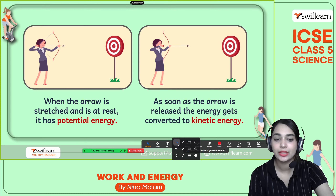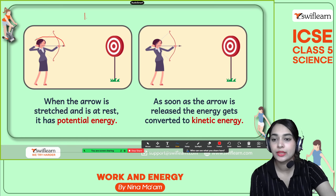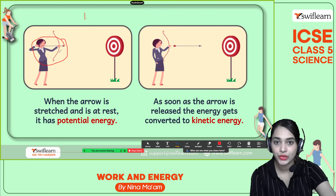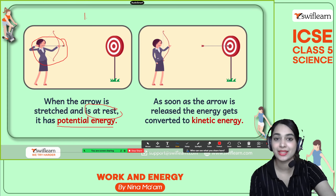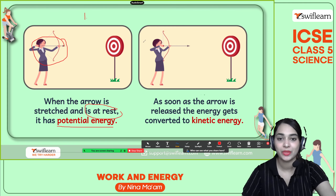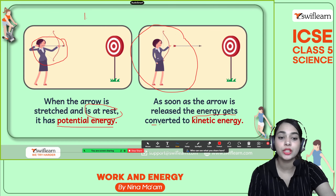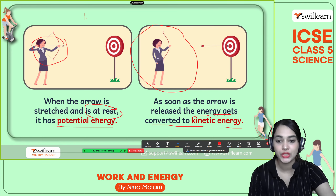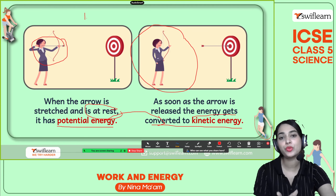Here are perfect examples of potential energy and kinetic energy. In the first scenario, the girl stretches the arrow but it is not moving yet — so it has potential energy when the arrow is stretched and at rest. Then it completely changes: as soon as the arrow is released, the energy gets converted to kinetic energy because motion or movement has happened within the arrow — potential energy converted to kinetic energy.